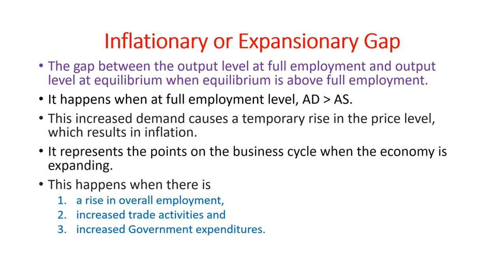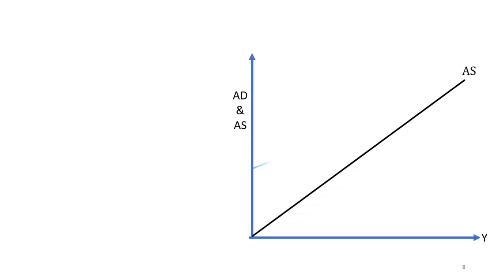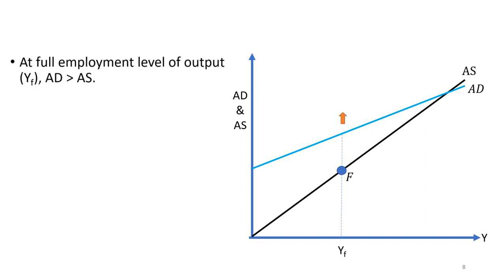Let's try to understand this with the help of a diagram. In this diagram, point F represents the full employment level of the economy. The corresponding level of output is YF, and at the full employment level of output, we can see that aggregate demand is greater than aggregate supply.